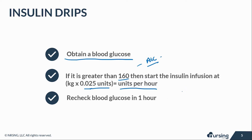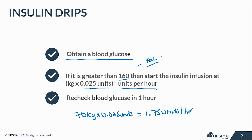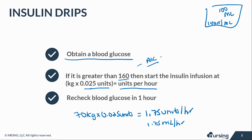Let's do some quick math. I need to run it at 0.025 units per kg. Let's say my patient weighs 70 kilos: 0.025 units × 70 kg = 1.75 units per hour. Most insulin bags you receive are 100 milliliters with a 1-to-1 concentration, meaning 1 unit per mL. So right away I know I need to run it at 1.75 mL per hour. This is useful because when you titrate it, you always know exactly how many units per mL you're giving.